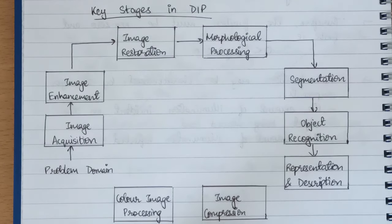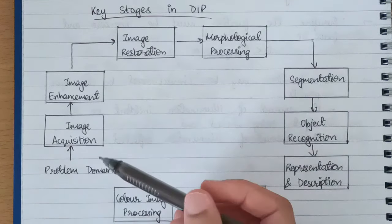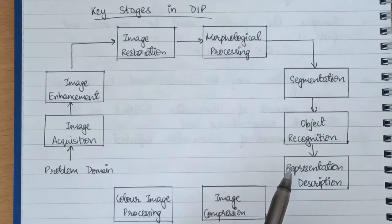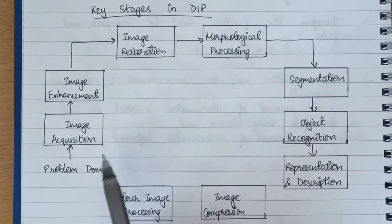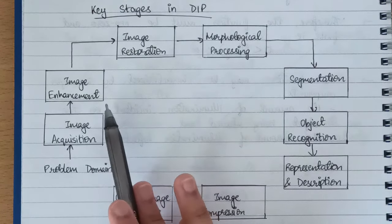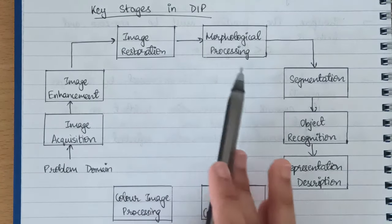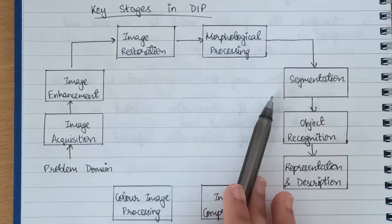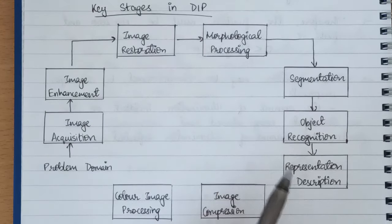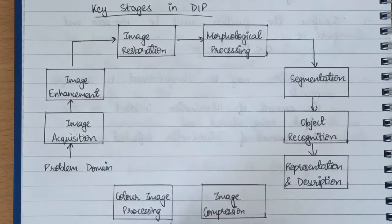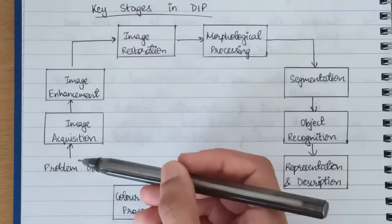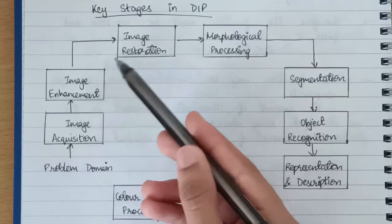Similarly, we have different stages in DIP, or different fundamental steps. These fundamental steps include image acquisition, image enhancement, restoration, morphological processing, segmentation, object recognition, representation and description. Two other processes which are also included are color image processing and image compression.